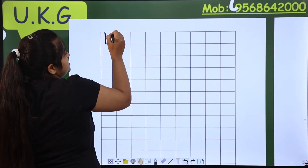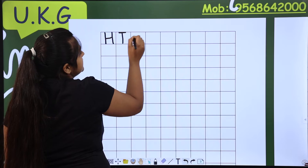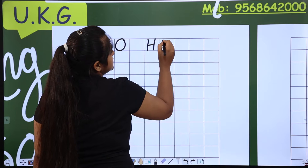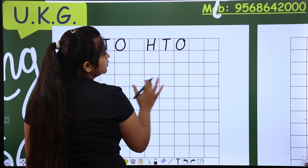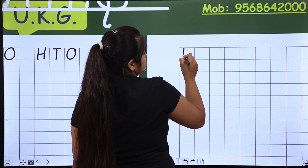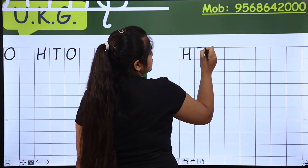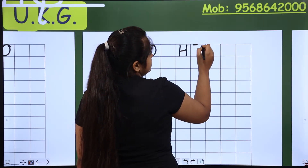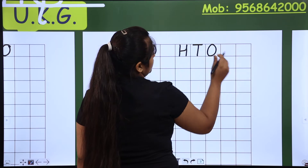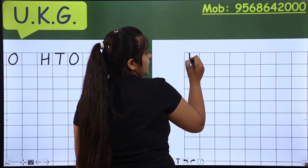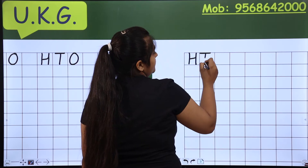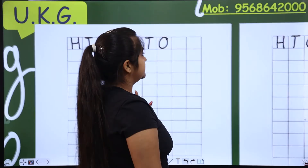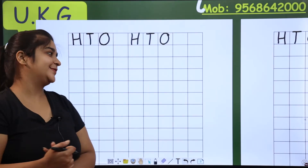Okay, let's go. H-T-O, H-T-O, H-T-O — and then the next page: H-T-O, H-T-O. Then again H-T-O. Now ma'am's work is done. Ma'am has done her homework quickly. Now you can do it quickly. Okay, wow, very good.